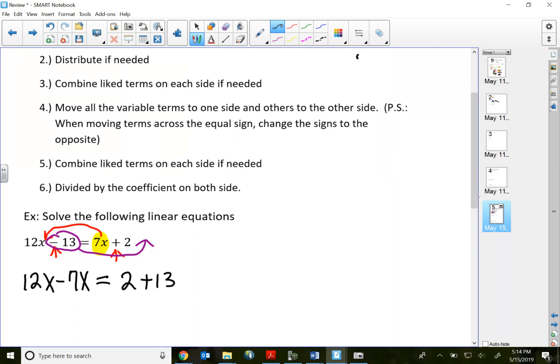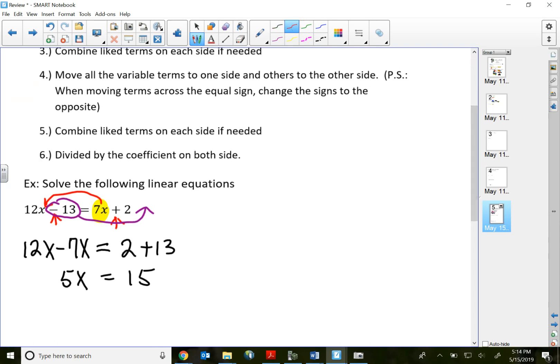So now let's combine again. 12x minus 7x is 5x equals 15. So divide both sides by the coefficient, which is 5. My answer: x equals 3.